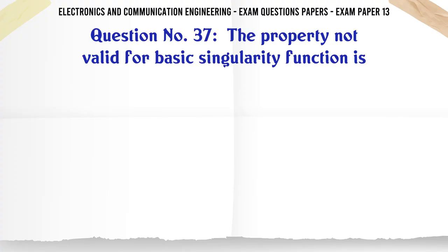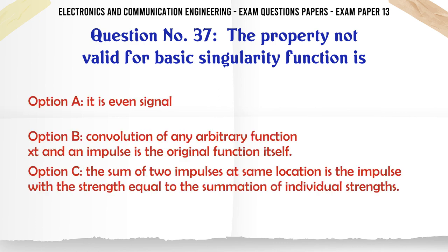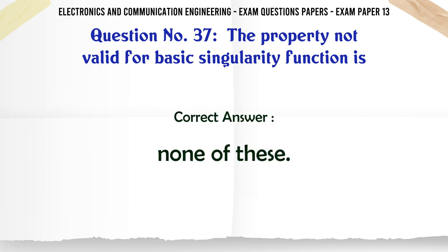The property not valid for basic singularity function is: A: It is even signal, B: Convolution of any arbitrary function X(t) and an impulse is the original function itself, C: The sum of two impulses at same location is the impulse with the strength equal to the summation of individual strengths, D: None of these. The correct answer is none of these.